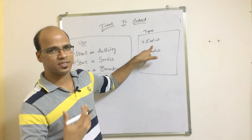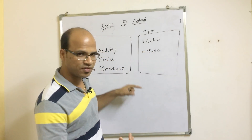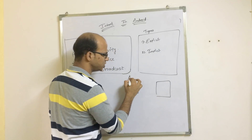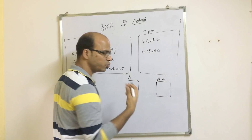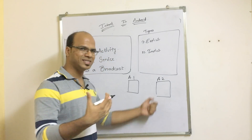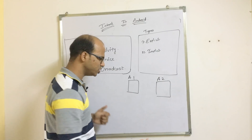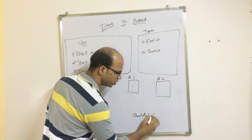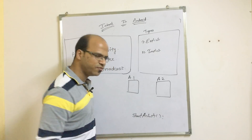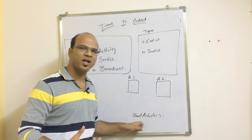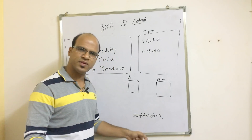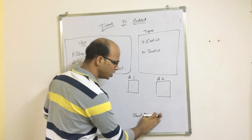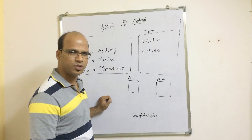To demonstrate explicit intent — calling an activity — let's say we have Activity 1 (a1) and Activity 2 (a2). In order to call the second activity, you just have to use a method called startActivity and that will do things for you. But hold on — which activity? In your application you might have 15 activities, so you have to specify which one to call.